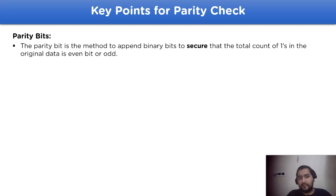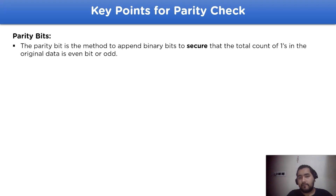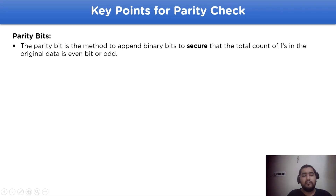Now let's move on to the next key point: parity bits. The parity bit check method is a method to add binary bits to secure the original data. This is done by counting the total number of ones in the original data, which is either an even or odd number.